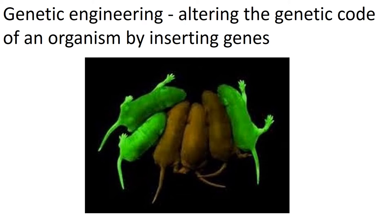This had to be done at the one-cell stage. It couldn't be done as an adult — there's no vector that can transfer genes into that many cells. So it has to be at the one-cell stage, and once you've got that gene in and you start to divide into two and four cells, you know that gene is going to be copied every time the cell copies itself.